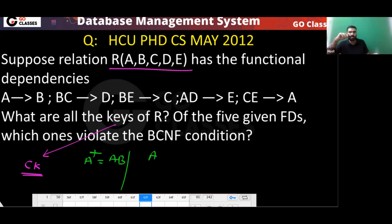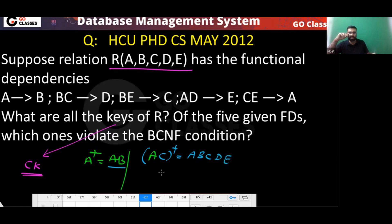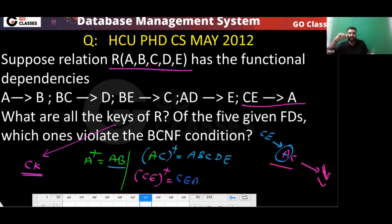You don't have to check AB because AB cannot give you anything. Let's check AC closure: AC gives you ABC, then BC gives you D, then AD gives you E. So AC can determine everything — AC is a candidate key.